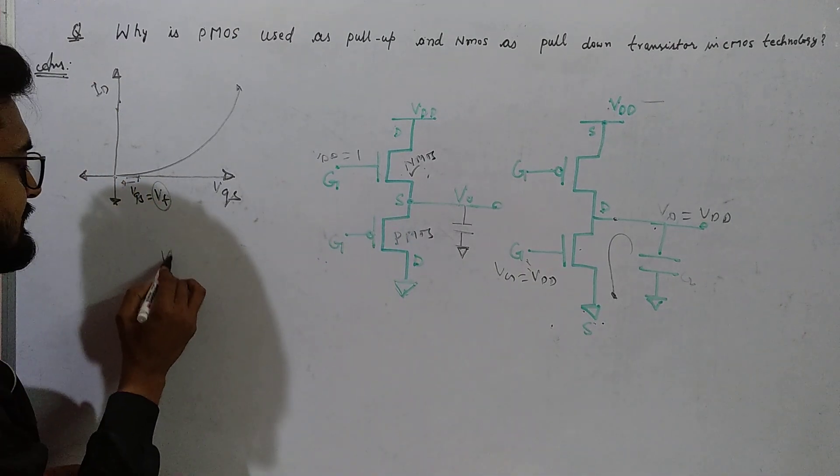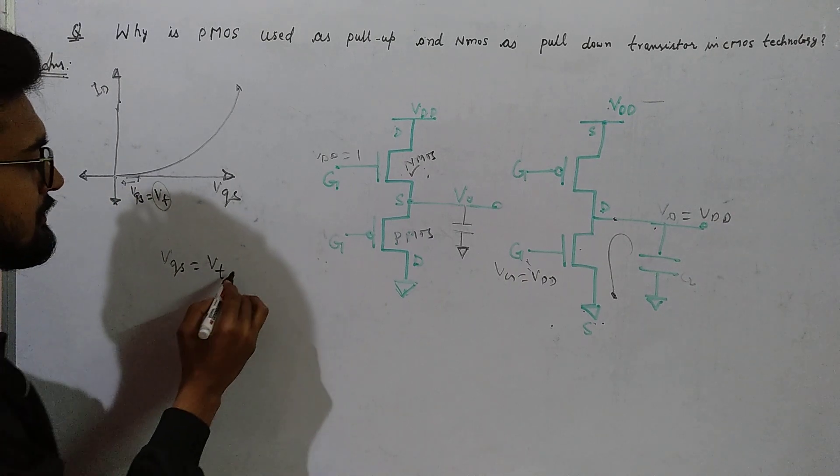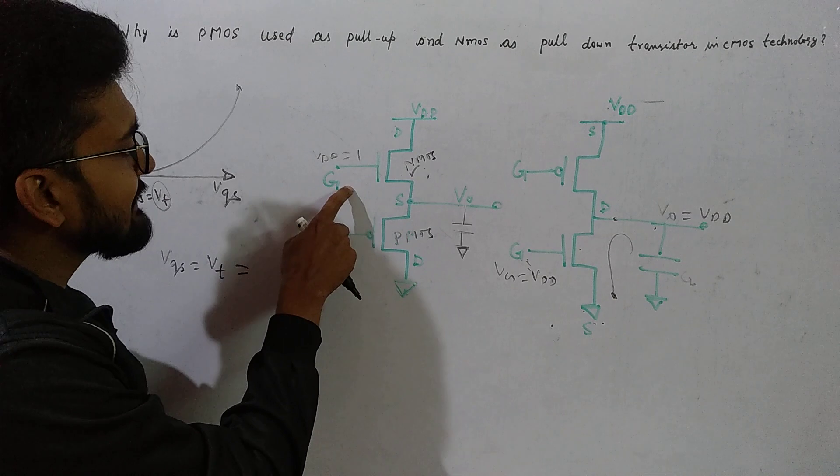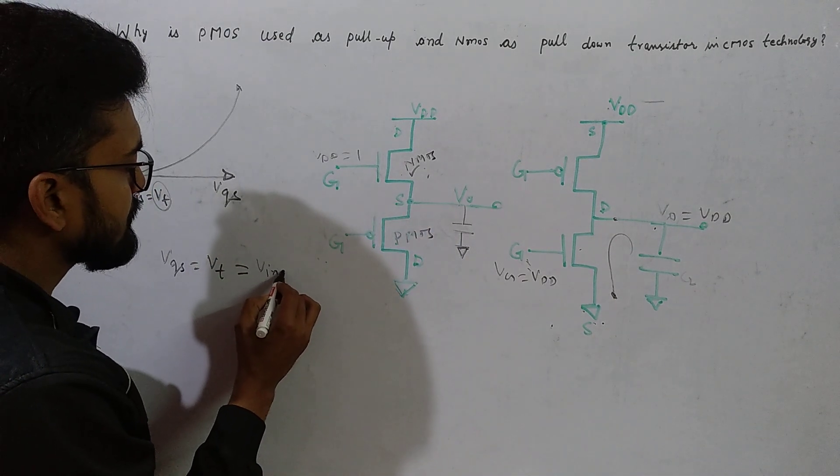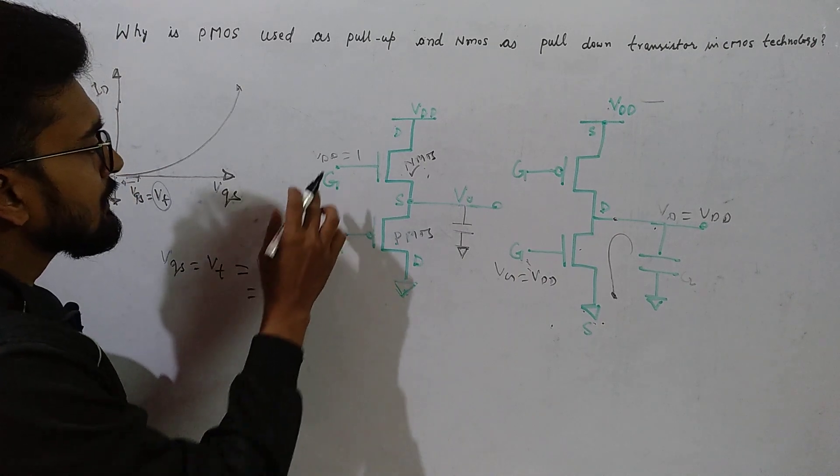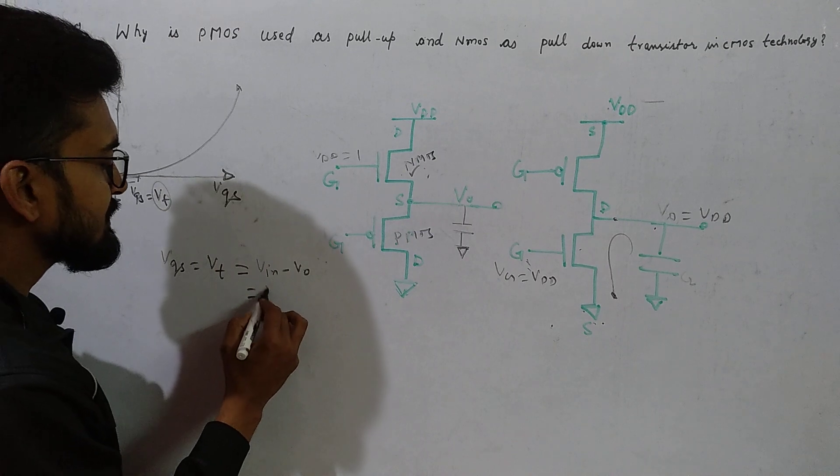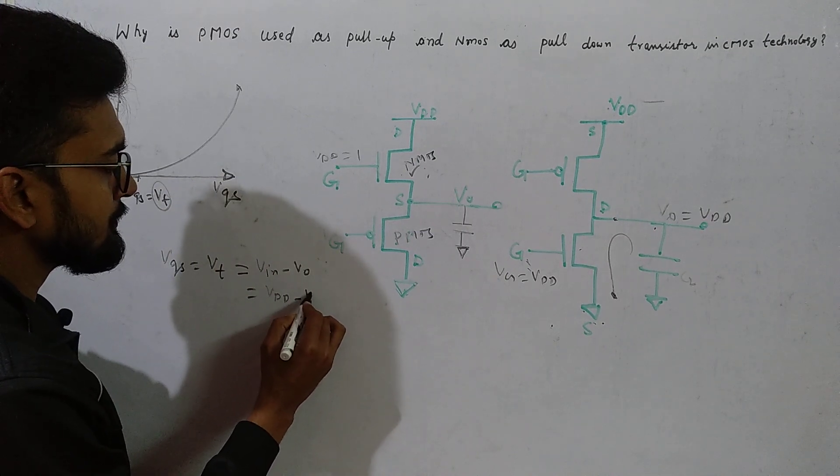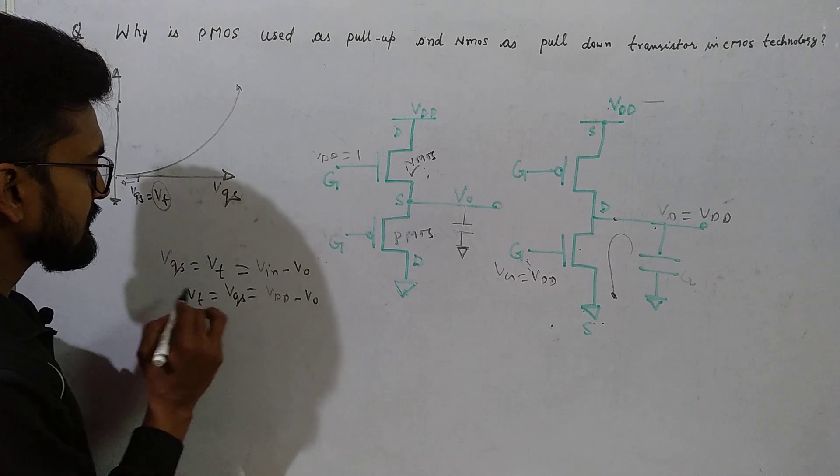VGS equals V threshold, which is voltage at gate minus voltage at output, or V input minus V output. Let the voltage at the input be VDD, so it will be VDD minus V output.